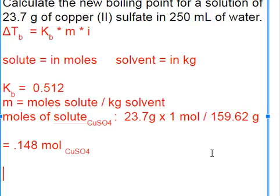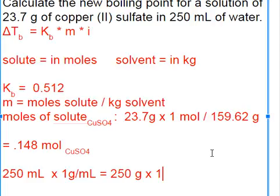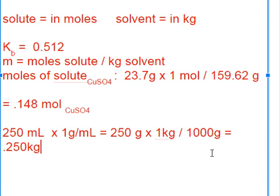The kilograms of solvent is a little easier. 250 milliliters of water. It's one gram per milliliter. So this is 250 grams of water. There's one kilogram in a thousand grams. So we're talking 0.250 kilograms of water.